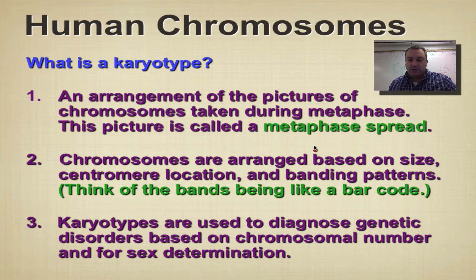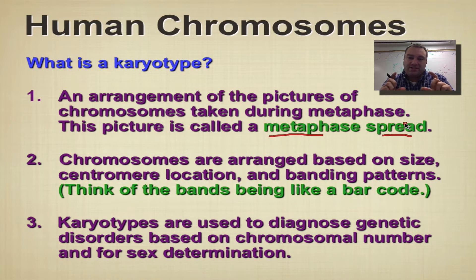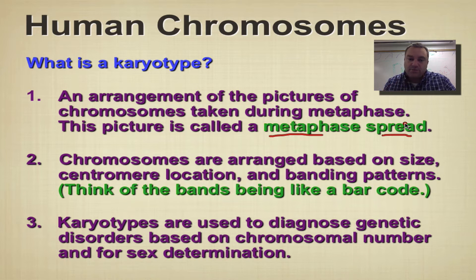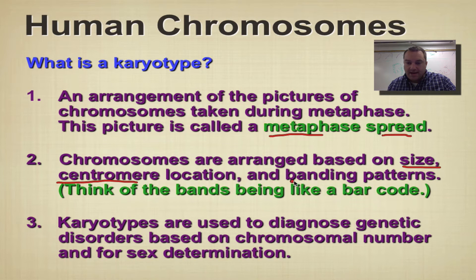The picture is called a metaphase spread, because we stopped mitosis at metaphase and then spread out the chromosomes. The chromosomes are then put into an arrangement based upon size, centromere location, and banding pattern.